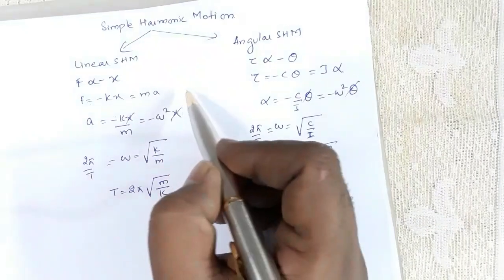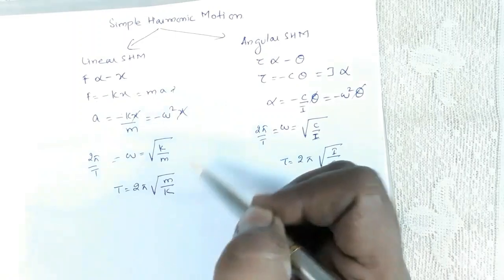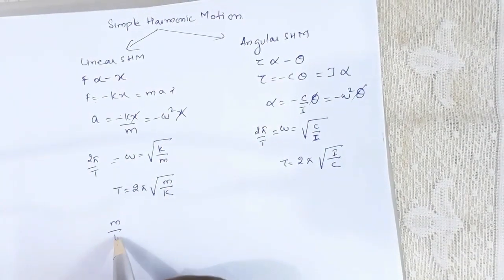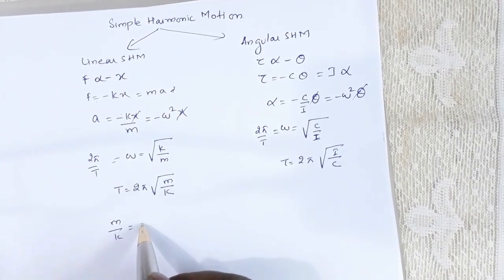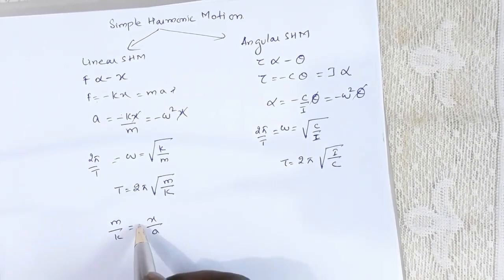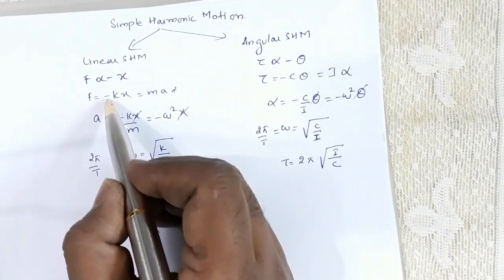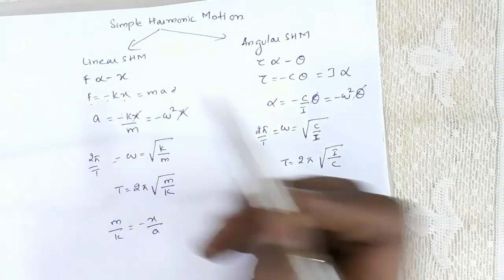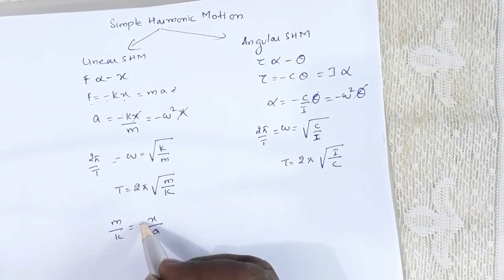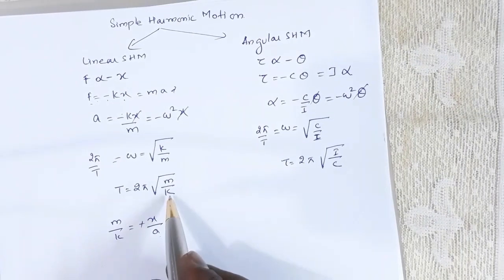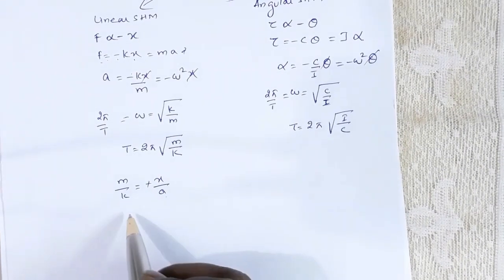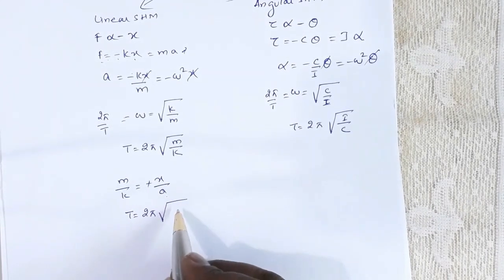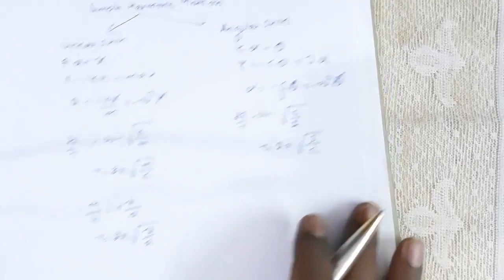Now if you see this relation m/k, I can write m/k = x/a with a minus sign. Remember this minus sign is because of the direction of force and displacement from mean position. So ignoring the minus sign, m/k = x/a, and substituting this, T = 2π√(x/a).